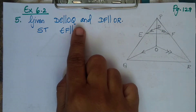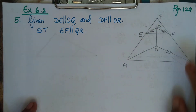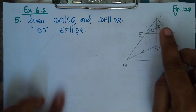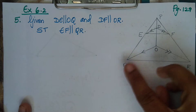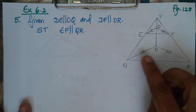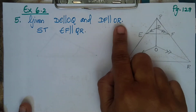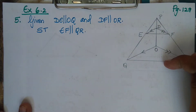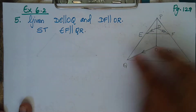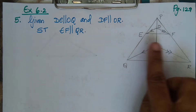Given: DE is parallel to OQ. In the figure, DE starts at D and ends at E, so the arrow should point towards E. DE is parallel to OQ, and the arrow should point towards Q. Also given: DF is parallel to OR. So we have two sets of parallel lines — one set with double arrows and one set with single arrows.